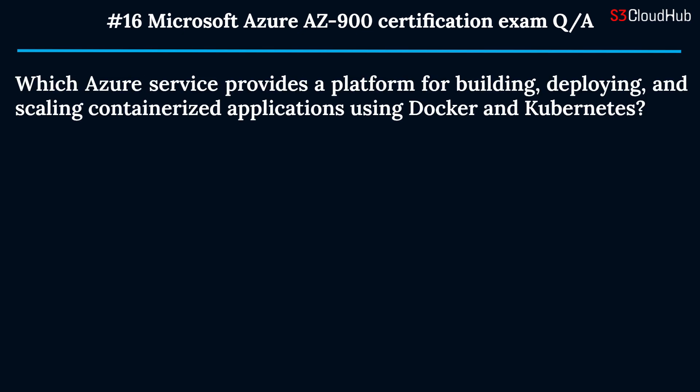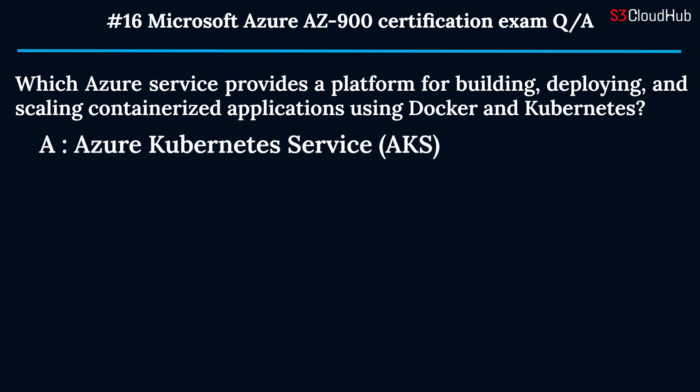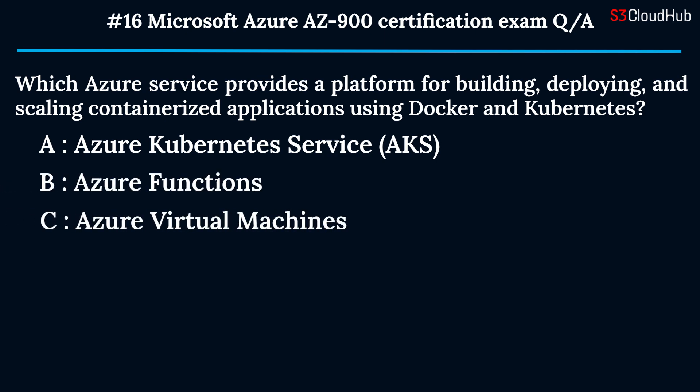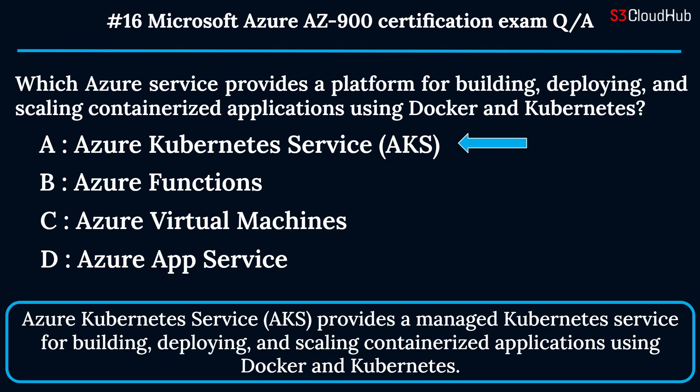The sixteenth question: which Azure service provides a platform for building, deploying, and scaling containerized applications using Docker and Kubernetes? Option A: Azure Kubernetes Service (AKS). Option B: Azure Functions. Option C: Azure Virtual Machines. Option D: Azure App Service. The correct answer is option A. Azure Kubernetes Service (AKS) provides a managed Kubernetes service for building, deploying, and scaling containerized applications using Docker and Kubernetes.